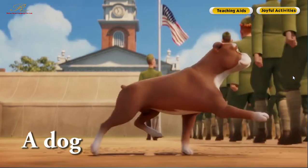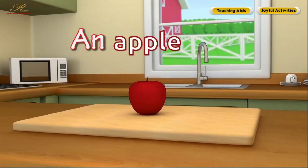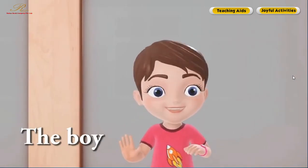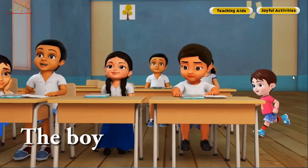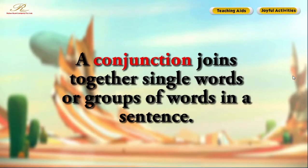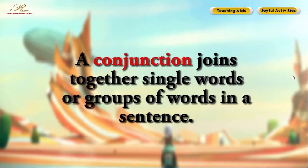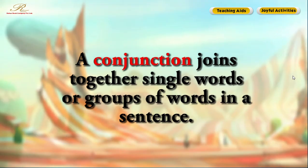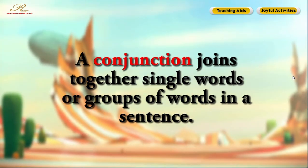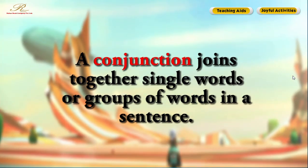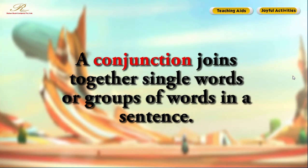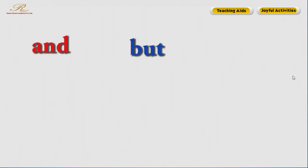Conjunctions. A conjunction joins together single words or a group of words in a sentence. For example: and, but, also, nor.